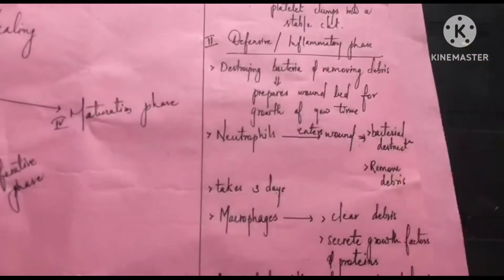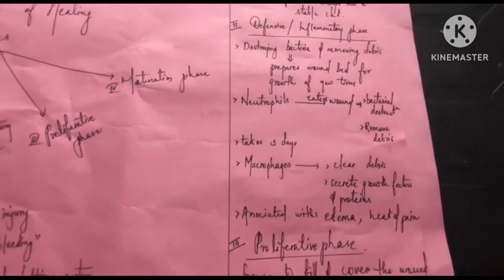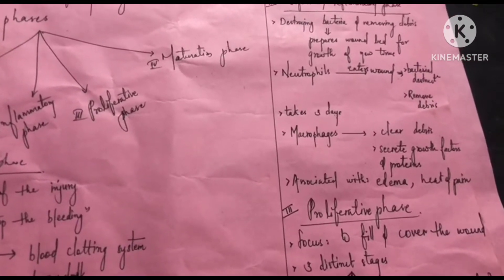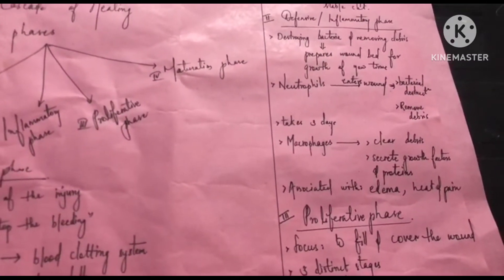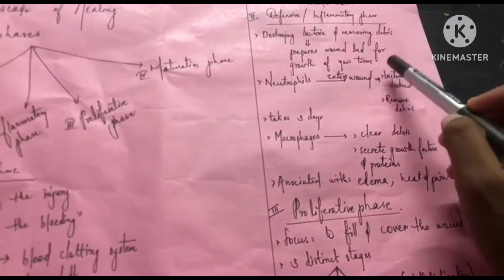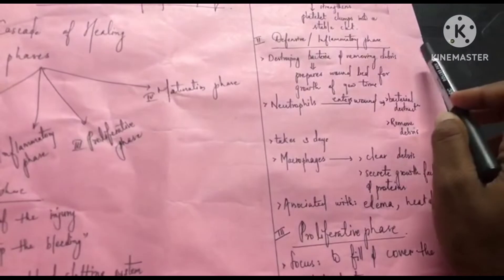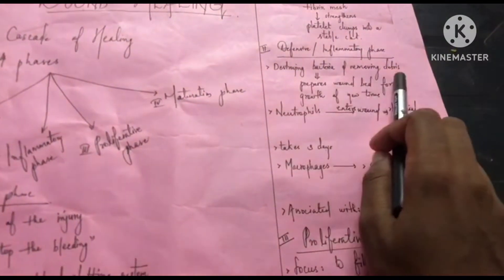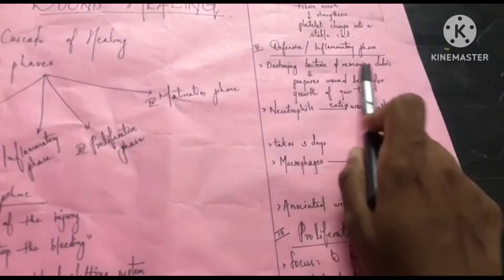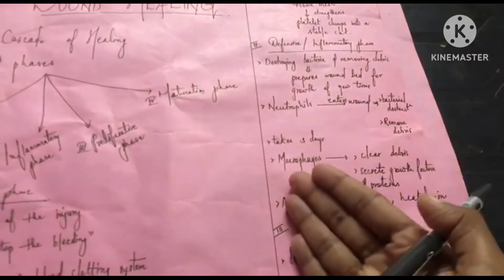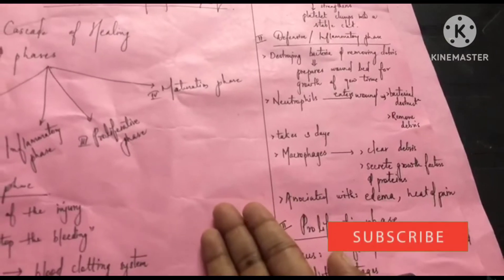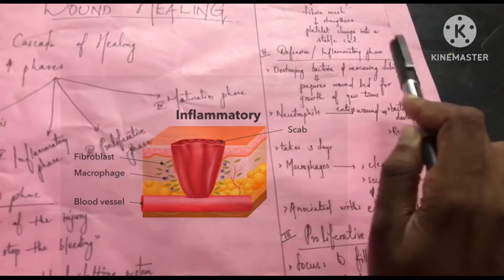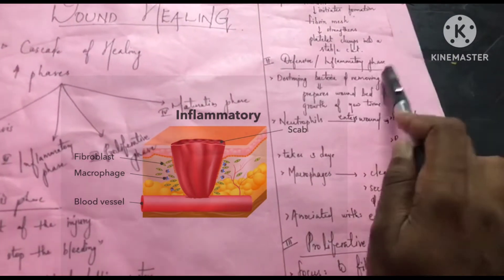The second phase is the defensive or inflammatory phase. In this phase, the main goal is to remove bacteria and debris — debris meaning waste materials — from the wound. It prepares the wound bed for the growth of new tissue, replacing old tissue with new tissue. Destroying bacteria and removing debris is the main objective of the defensive or inflammatory phase.